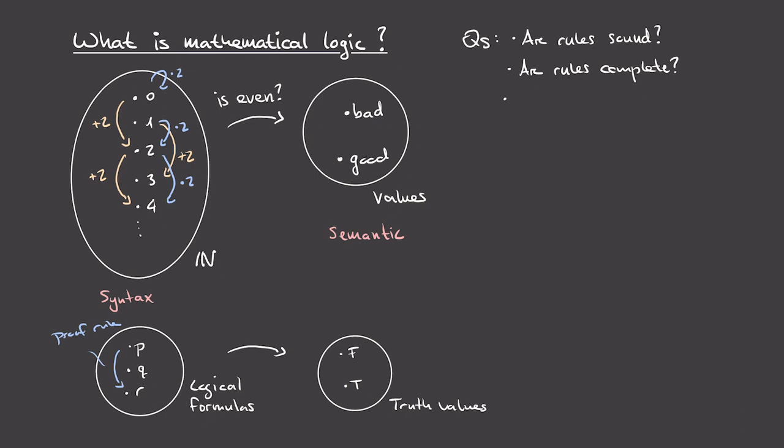The next question is whether our rules are minimal. Minimality of a set of rules means that whenever we remove one of these rules, we lose some of the things we can deduce. For instance, this set of two operations — the orange and the blue — is not minimal because we could remove the orange rule and still manage to get all of the good numbers. Having a minimal set of rules is desirable because it reduces the complexity of our procedures.